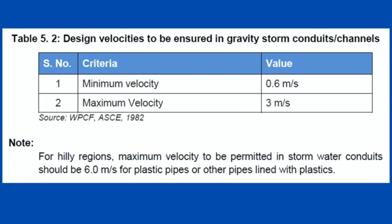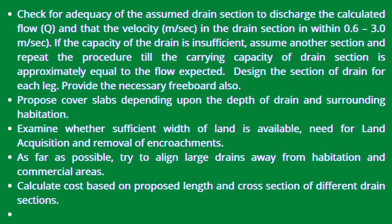Where velocities exceed the limit, junctions should be provided. For hilly regions, the maximum velocity permitted in stormwater conduits should be 6 meters per second for plastic pipes or pipes lined with plastic. Check the adequacy of the drain section to discharge the calculated flow Q with velocity V between 0.6 and 3 meters per second. If the capacity is insufficient, assume another section and repeat the procedure until the carrying capacity approximately equals the expected flow.